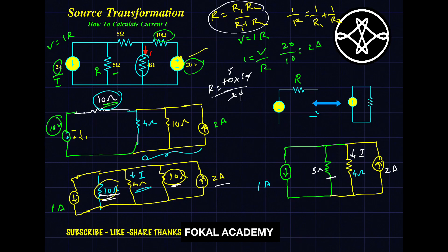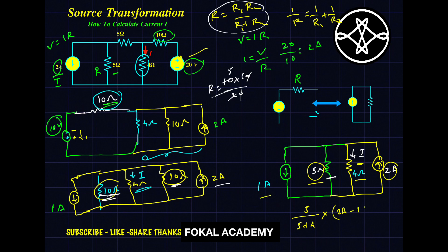Now we can easily find the current I flowing through the 4 ohm resistor by applying the current division rule. At the node, 2 amperes is entering and 1 ampere is leaving, so the net current available is 2 − 1 = 1 ampere (since both are in opposite directions). Using the current divider, I = (opposite resistance / total resistance) × total current = (5 / (5 + 4)) × 1 = 5/9 amperes.